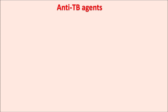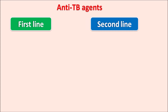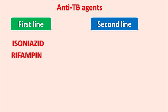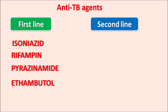They can be classified as first line drugs as well as second line drugs. First line drugs include isoniazid, rifampin, pyrazinamide, and ethambutol. These four drugs are used as first line agents in the treatment of tuberculosis.